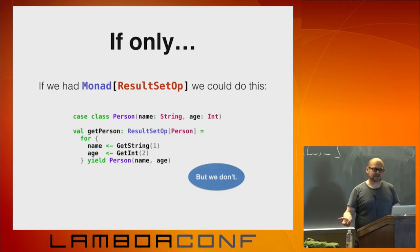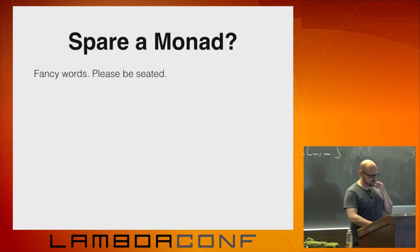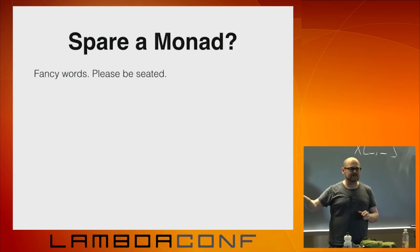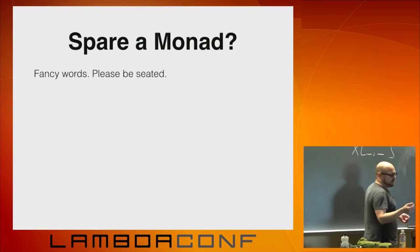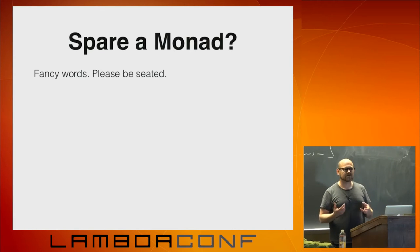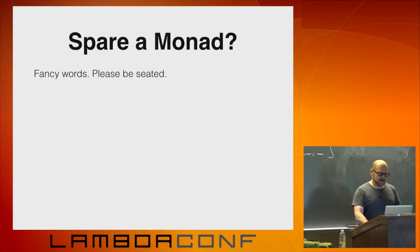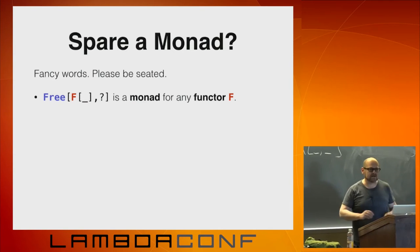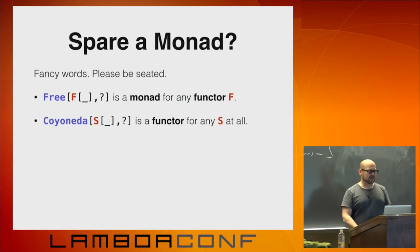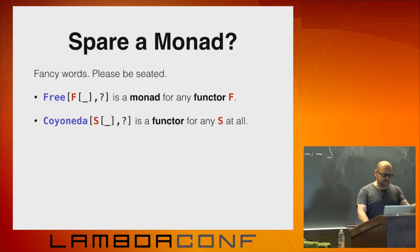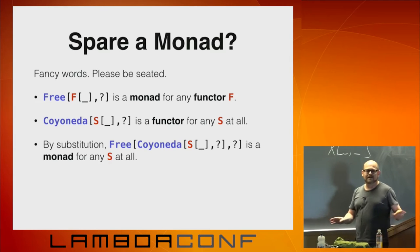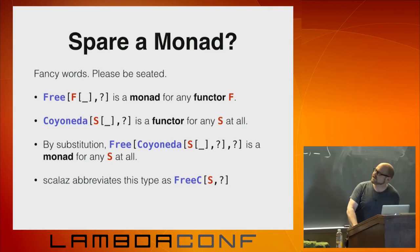So what if we just borrow a monad instance? The content of this slide could have been a two-hour workshop. You don't really have to internalize the way this stuff works just to go through the mechanics. There's a data type called Free. Free is a monad for any functor F. ResultSetOp isn't a functor either. But there's this other thing called Coyoneda — Coyoneda[S] is a functor for any S at all, any type constructor with a single hole in it. So Free of Coyoneda of anything is a monad for any type constructor with a single hole in it. Scalaz abbreviates that and calls it FreeC.